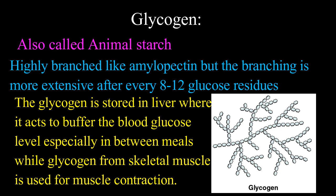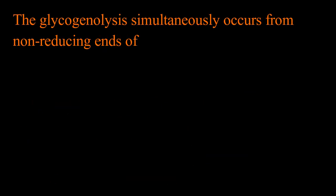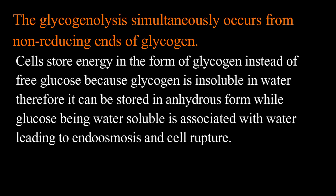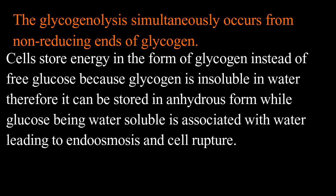especially in between meals, while glycogen from skeletal muscle is used for muscle contraction. Glycogen has a single reducing end and multiple non-reducing ends at the end of branches. Glycogenolysis, that is the breakdown of glycogen, simultaneously occurs from the non-reducing ends of glycogen.